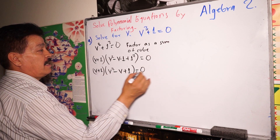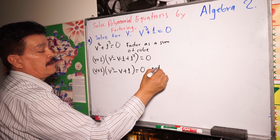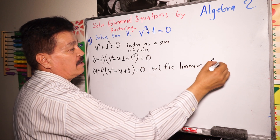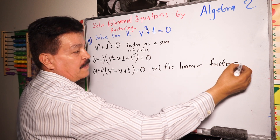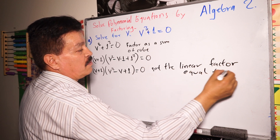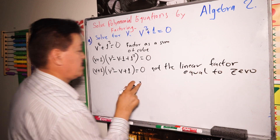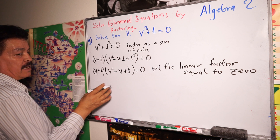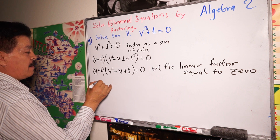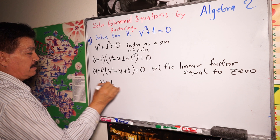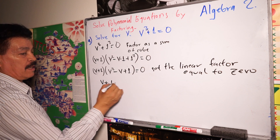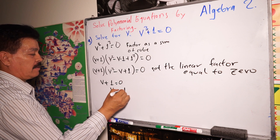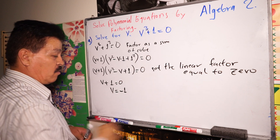Now we set the linear factor equal to zero. B plus one equals zero. Solving the problem, B equals negative one. So we have one solution here.